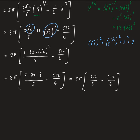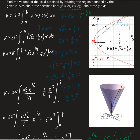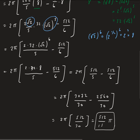Finding a common denominator of 30: 512 over 5 times 6 gives 3072 over 30, and 512 over 6 times 5 gives 2560 over 30. Taking the difference gives 512 over 30, which simplifies to 512 over 15. So the final answer is 512 pi over 15. That is the volume of our solid, which would be in units cubed for an application problem.